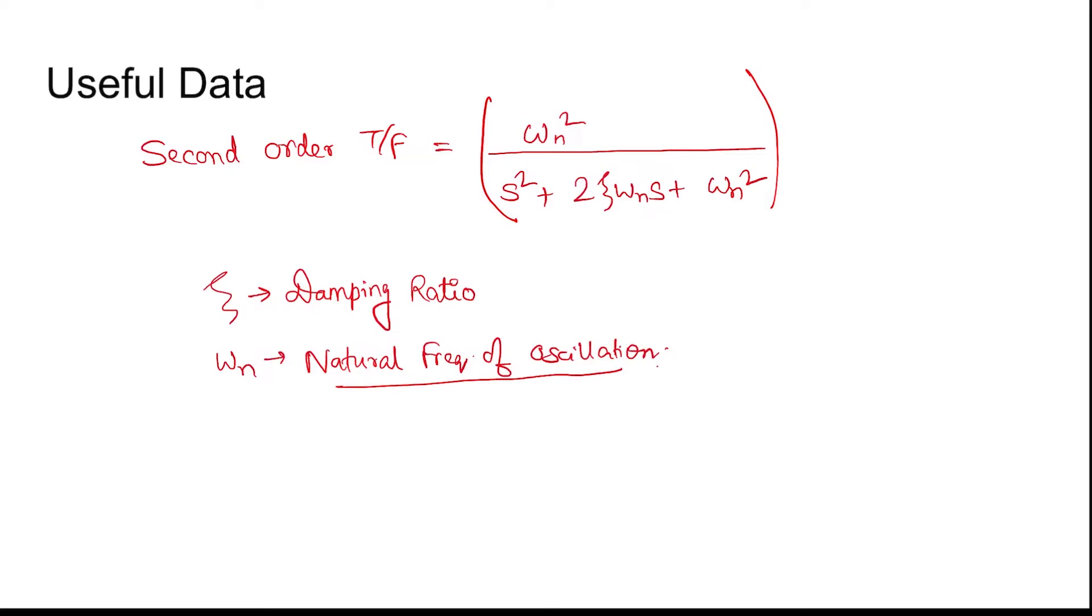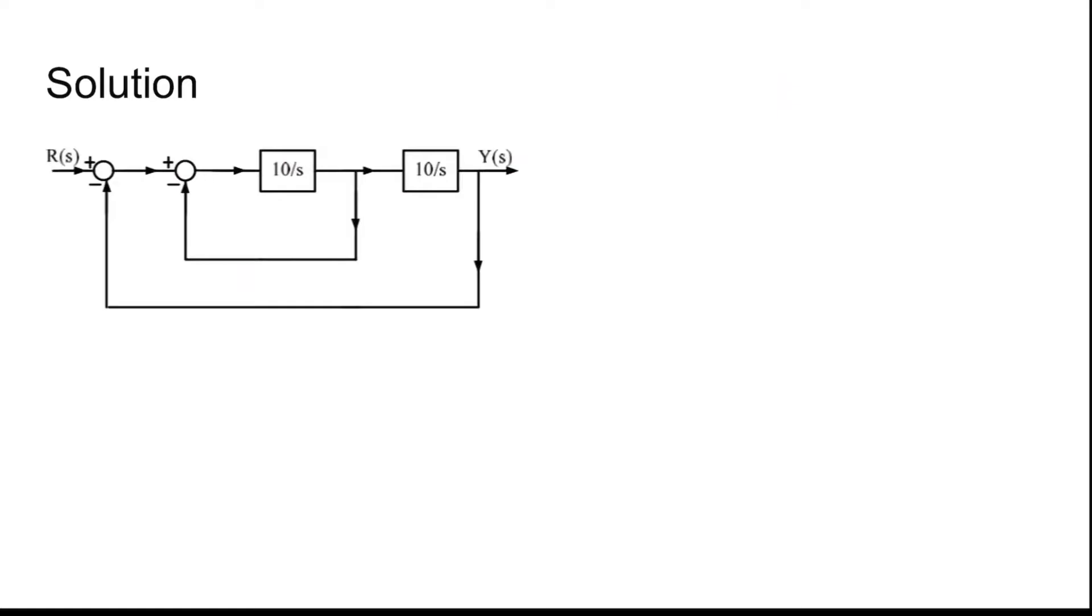Now coming to the solution, this is the block diagram given. If this is y(s), we can write this point as y(s) divided by 10 by s. This is r(s) and this is y(s). So this is r(s) minus y(s), and this is y(s) by 10 by s.